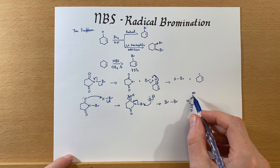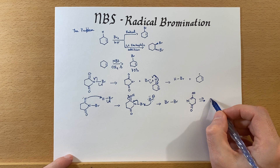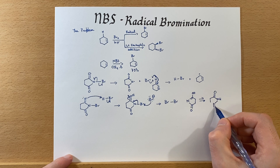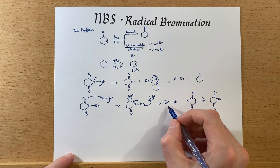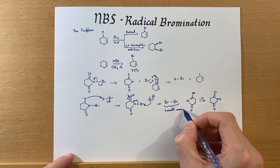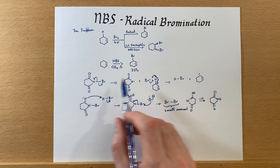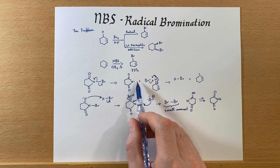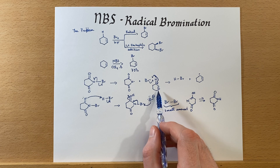Now we have an enol, and so that will undergo tautomerization, ending up generating a proton and the nitrogen product in solution. So that is the fate of the NBS. A small amount of bromine is generated slowly as the reaction progresses. The important thing here is we're generating radicals as this goes along, and that will propagate the reaction. Once that does, we're generating bromine radicals that cause the radical reaction to happen.